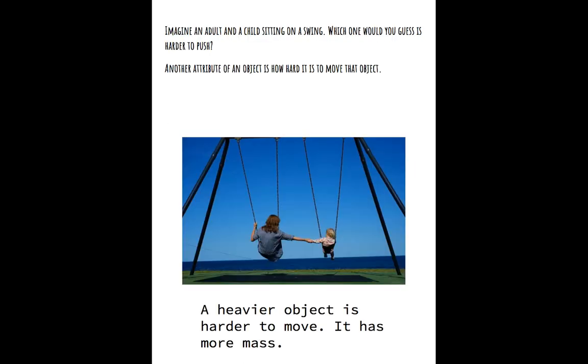So this leads me to another attribute of an object: how hard is it to move that object. Let's imagine an adult and a child sitting on a swing. Which one would you guess is harder to push? If you guess the adult will be harder to push, you're right. The reason for this is a heavier object is harder to move because it has more mass.